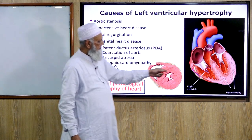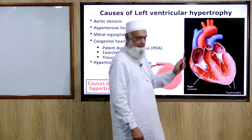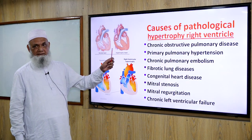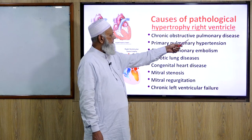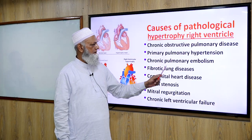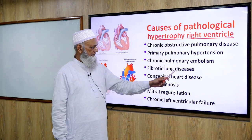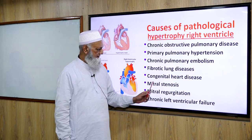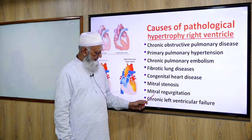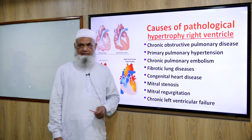This is hypertrophied muscle compared to normal muscle. Pathological hypertrophy of the right ventricle occurs in chronic obstructive pulmonary disease, primary pulmonary hypertension, chronic pulmonary embolism, fibrotic lung disease, congenital heart disease, mitral stenosis, mitral regurgitation, and chronic left ventricular failure.